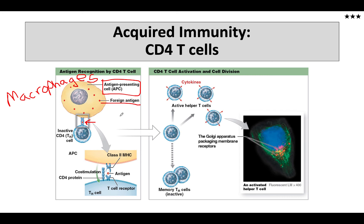I like to think of these cells as trophy hunters. They're out searching, they're destroying, and then — forgive the grim analogy — they're taking the heads of their kill and mounting them on the wall, in terms of displaying antigens on the MHC class 2.